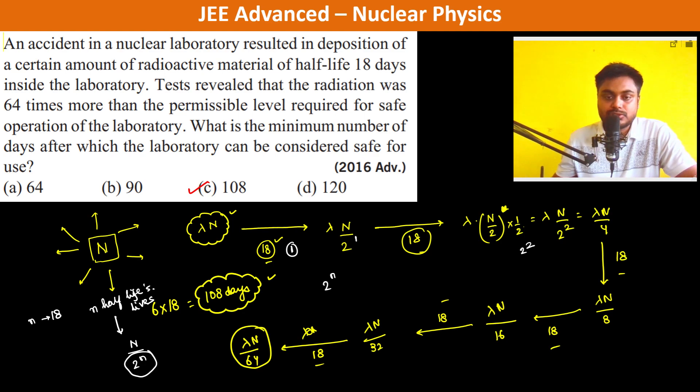So now, 2 to the power n should be 64. So therefore, this is 2 to the power 6. So n should be 6. So after 6 half-lives, 6 into 18, which is again 108 days. Thank you.